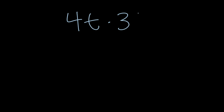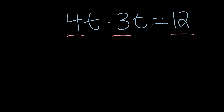If I have 4t times 3t, then 4 times 3 equals 12 — I've combined the coefficients. Then t times t: think of a 1 being there, so t to the 1st times t to the 1st is t squared. The answer is 12t squared.